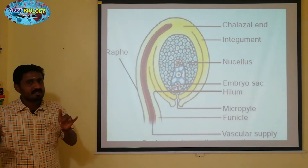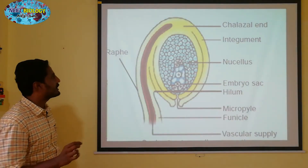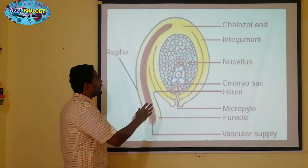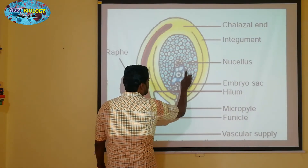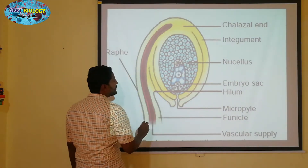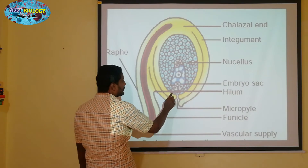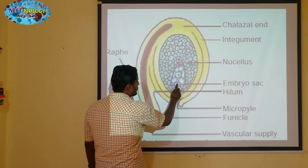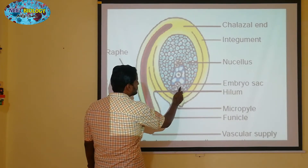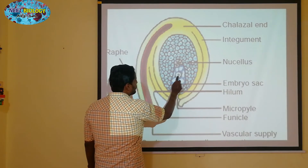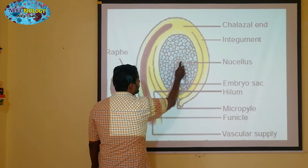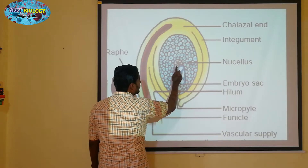We will talk about embryo sacs. The embryo sac contains synergids, secondary nuclei, and antipodals.